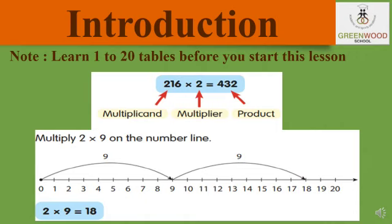Now as you can see, a number line is there. What actually means by multiplication? 2 into 9 — that means we are adding 9 two times. So instead of adding numbers again and again, we use multiplication, which is a very simple method. That is why multiplication is also known as repeated addition.